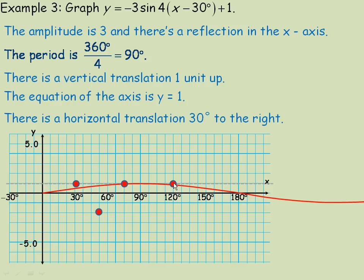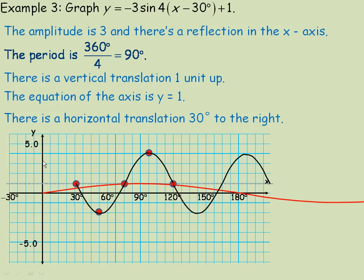Halfway between the middle and the end is 3 units above the axis. There are 6 blocks between the beginning and the middle, so at 3 blocks in we're down 3, and at 3 more blocks we're up 3. We draw a sine curve between those points — that's one period. Duplicating the cycle gives us additional periods, and we can extend in both directions, resulting in 3 cycles of y equals negative 3 sine(4x minus 30 degrees) plus 1.